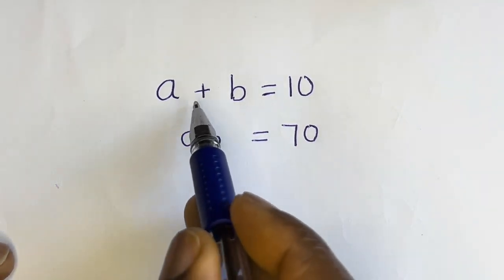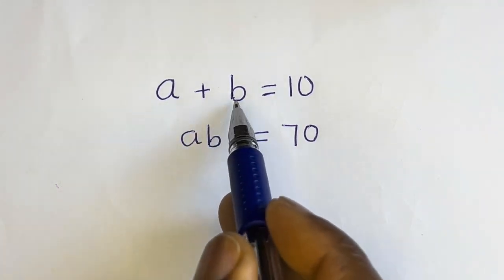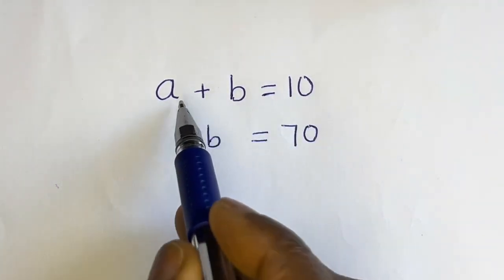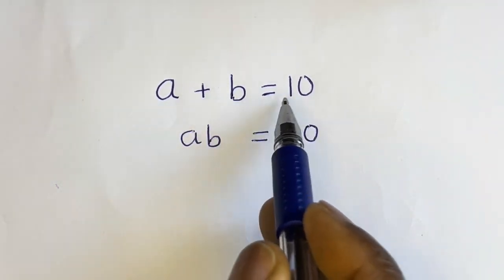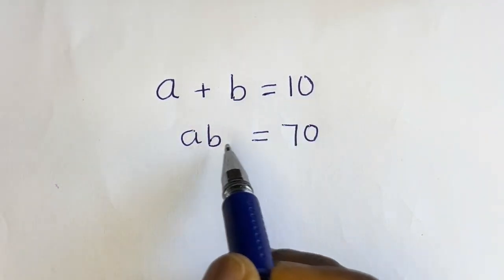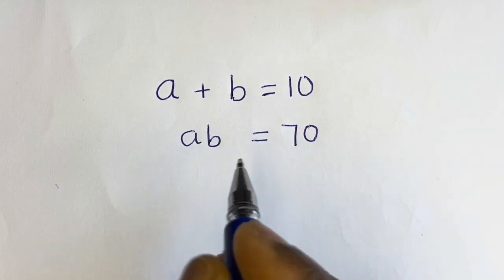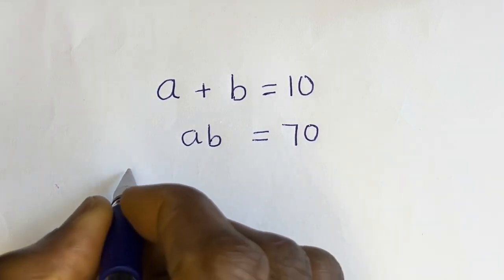Hello. How to solve for A and B in this equation: A plus B is equal to 10, AB is equal to 70. Solution.